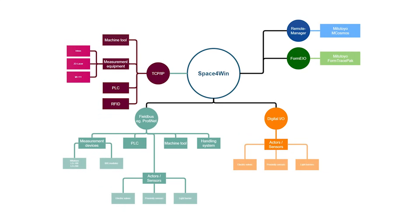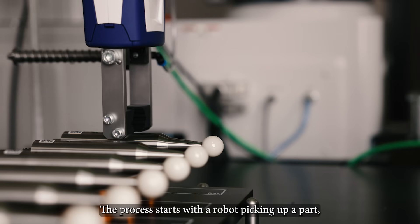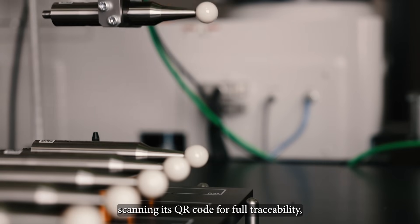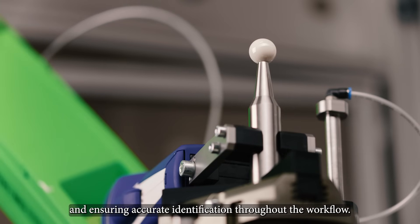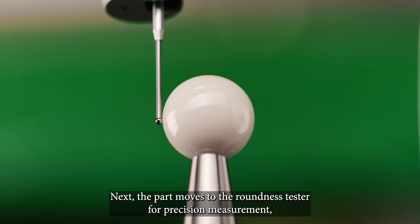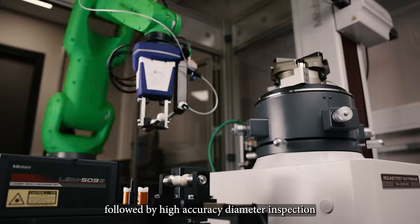The process starts with a robot picking up a part, scanning its QR code for full traceability and ensuring accurate identification throughout the workflow. Next, the part moves to the roundness tester for precise measurement, followed by high-accuracy diameter inspection with the laser scan micrometer to ensure optimal quality.